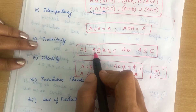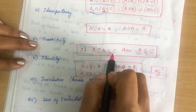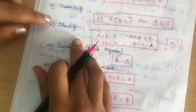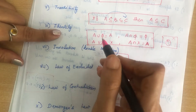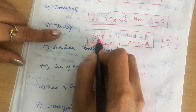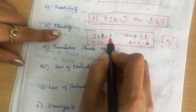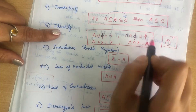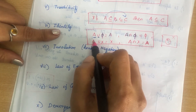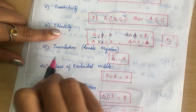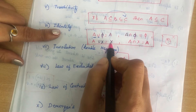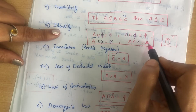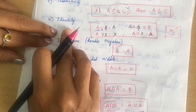Fifth is transitive property: if A ⊆ B and B ⊆ C, then A ⊆ C. Sixth is identity property: A ∪ φ = A, A ∩ φ = φ, A ∪ X = X (where X is the universal set), and A ∩ X = A. Since X is maximum, union with X gives X; intersection with X gives A.